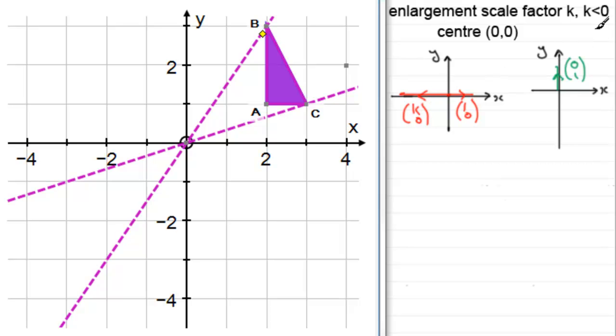And with this one (0,1), if we enlarge this scale factor K but K is a negative number, it gets projected back through the origin and its length is increased by K units. So this vector here will be the vector (0,K), and again it's not (0,-K). K is already a negative number.